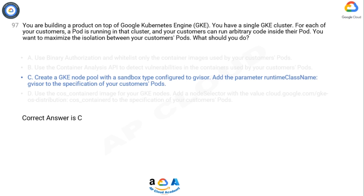Explanation: By creating a GKE node pool with a sandbox type configured to gVisor and specifying runtime class name gVisor in the pod specification for customers' pods, you can enhance isolation. gVisor is an open-source user-space kernel providing improved security and isolation by acting as a sandbox for running containers. It adds an additional layer of protection between containers, reducing the risk of security vulnerabilities and malicious code.